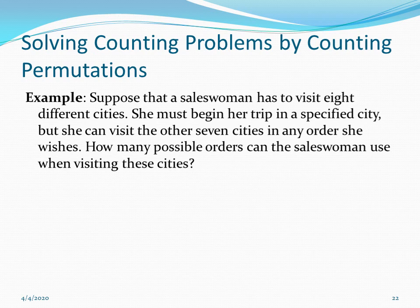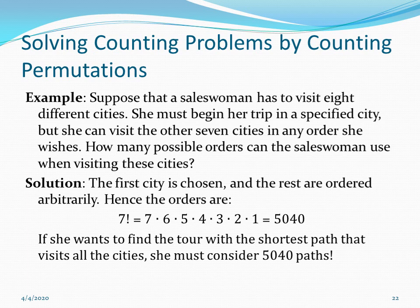Another example: a saleswoman must visit eight different cities and must begin her trip in a specified city. The order in which she visits the remaining seven cities is a permutation. We are counting P(7,7) — the number of arrangements of all seven cities — which is 7! = 7 × 6 × 5 × 4 × 3 × 2 × 1 = 5,040 different ways to visit the remaining seven cities.